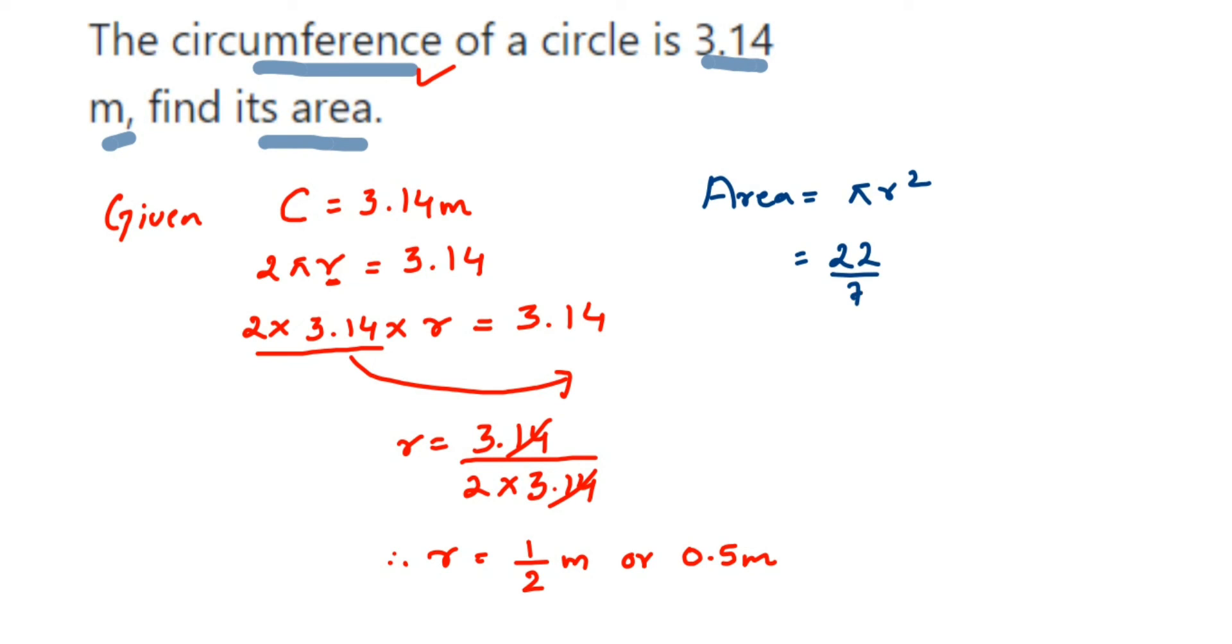r is 0.5 squared, so this equals 22/7 × 0.25. When you solve this, you are going to get the answer as 0.785.